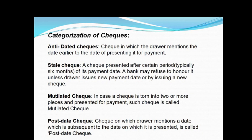A stale cheque is one presented after a certain period — typically six months — from its payment date. A bank may refuse to honor it unless the drawer issues a new payment date or a new cheque. A stale cheque is not invalid, but the bank will not make payment against it.